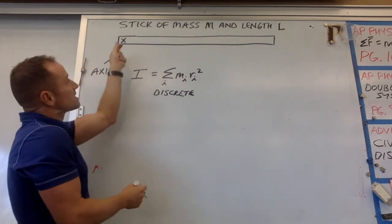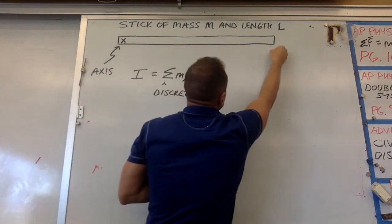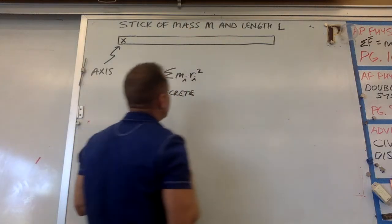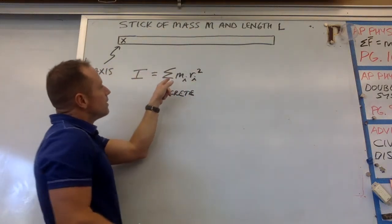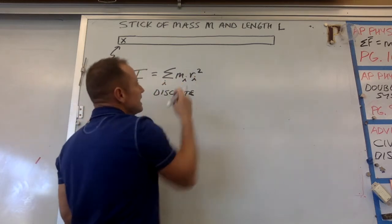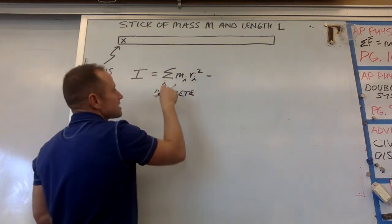Now this thing is not a bunch of discrete masses. This is a continuous distribution of mass. The mass is all smeared out. So what will happen is instead of a sum of a finite number of masses, you have an infinite sum of infinitesimal masses.